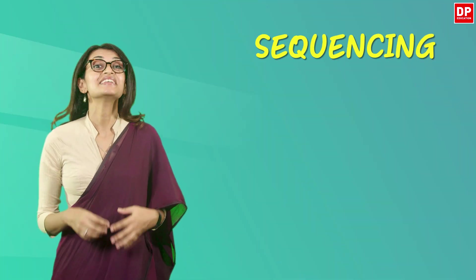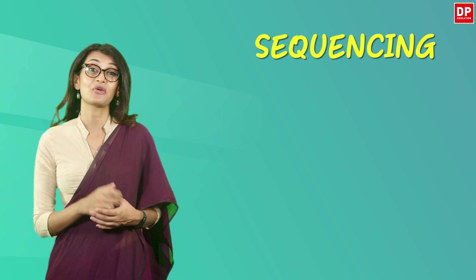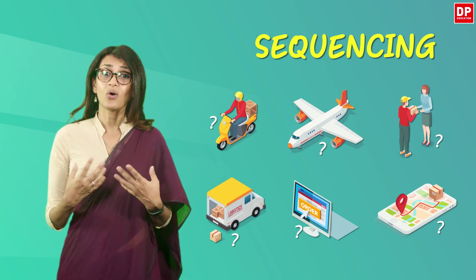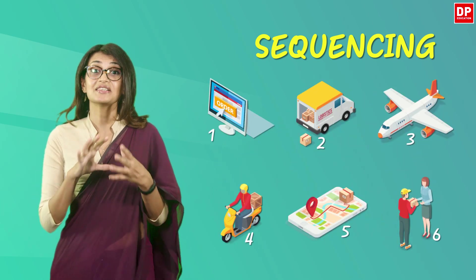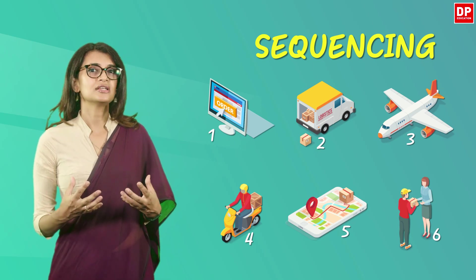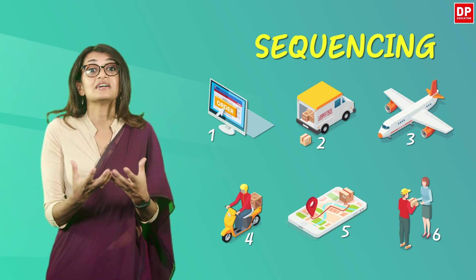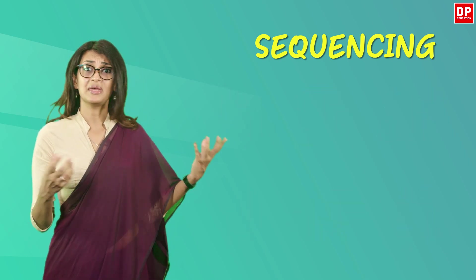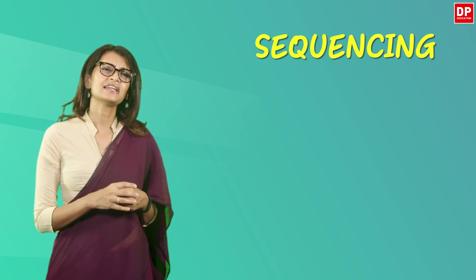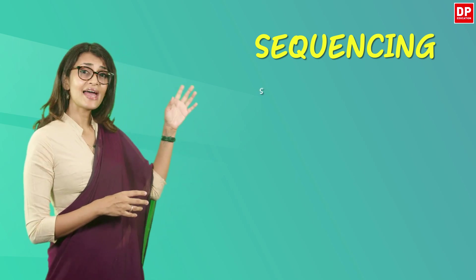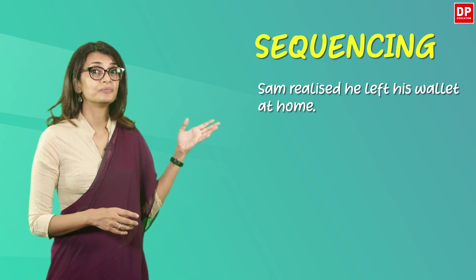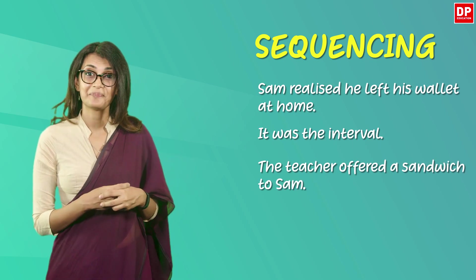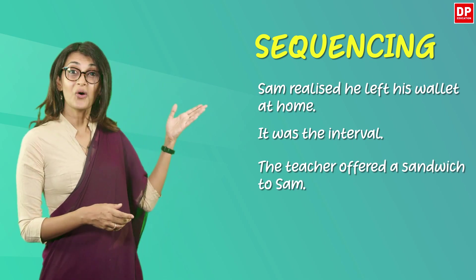Sequencing is yet another type of question you may come across. This type of question requires students to figure out the order in which events happened in a story. However, this question is not asking which event appeared first — an event that appeared in the first paragraph may not have happened first. For example: 'Sam realized he left his wallet at home. It was the interval. The teacher offered a sandwich to Sam.' Let's put these events in order.